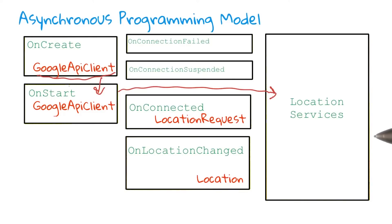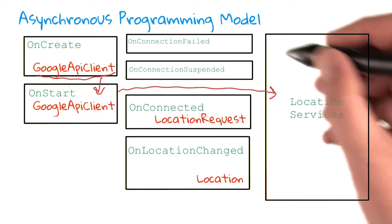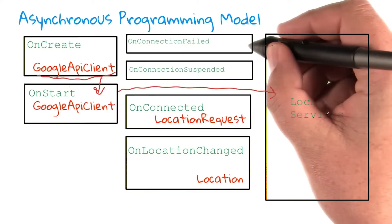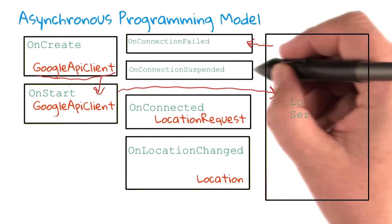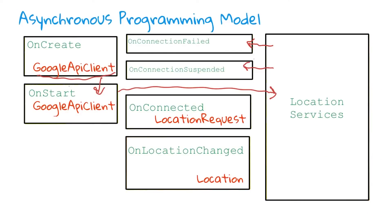In order to use this, you're going to need to override a number of different methods. One is onConnectionFailed, which the services will call whenever the connection drops and you need to handle what to do — generally just reconnecting. One is onConnectionSuspended, which is very similar to onConnectionFailed. It will be called if the connection gets suspended but not necessarily broken, and you might want to cache some information.